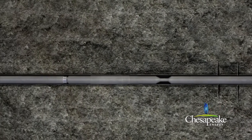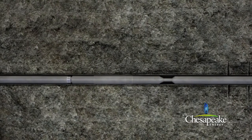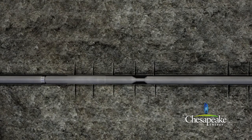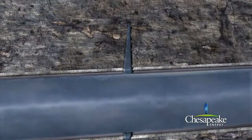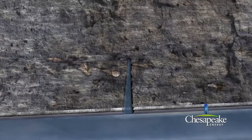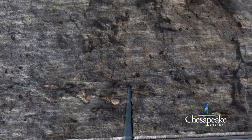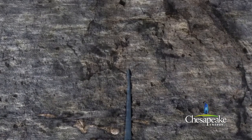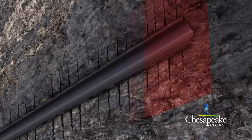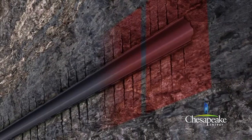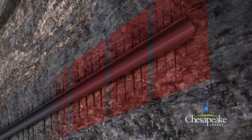The perforating gun is again fired at roughly 50 to 80 foot intervals, creating a connection between the production casing and the shale formation. The fracturing process is then repeated until all of the stages are completed. A typical shale well has approximately 8 to 12 stages of fracturing.